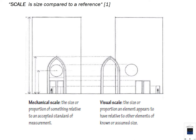Scale is size compared to a reference. We have mechanical scale — the architect scale and engineering scale — which is size or proportion relative to an accepted standard of measurement. Visual scale is the perceived size or proportion an element appears to have relative to other elements of a known or assumed size.